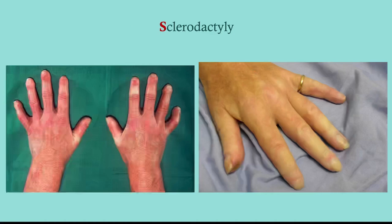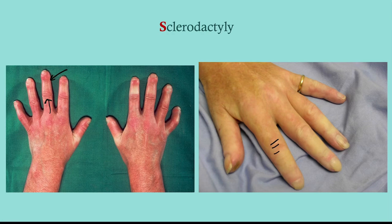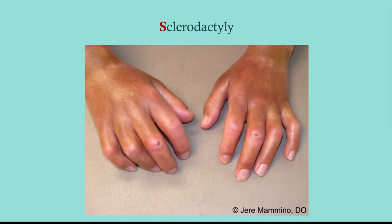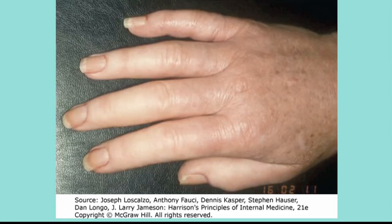Sclerodactyly — what I look for personally is a loss of those skin folds on the DIP or PIP joints. If you look at your own hands, you can see those nice little wrinkles; that's loose skin that allows you to make a fist without tearing. With sclerodactyly, you have deposition and thickening and you lose that. In severe cases the patient doesn't have enough skin and it causes ulceration.